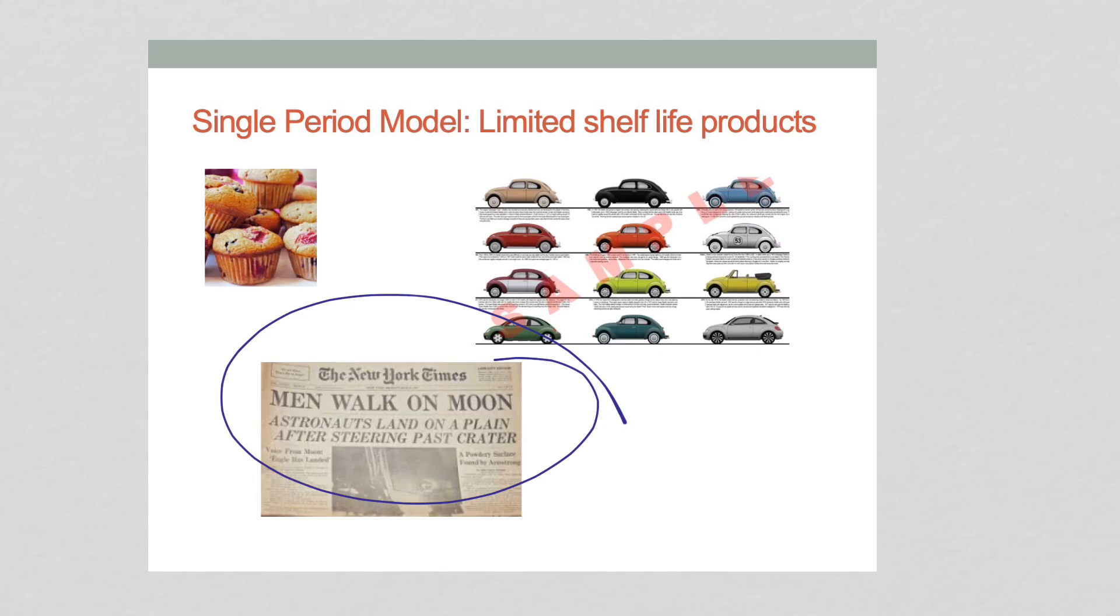Another example is news. In fact, this model was developed decades ago. It used to be known as the newspaper boy problem, or newspaper person problem, whereby they used to sell newspapers on the street. A person would have a bag of newspapers and sell them to people on the street. If they had too many, then they would be stuck with the newspapers and have an extra cost. And if they had too few newspapers, then they would have lost sales again.